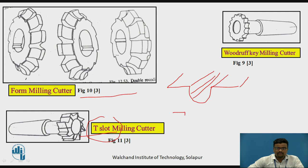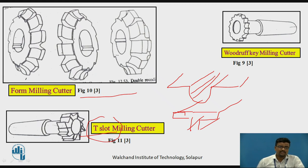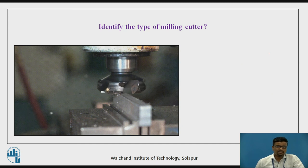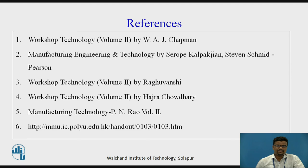With the T-slot milling cutter you can generate T-slots on the workpiece. If you want to provide a keyhole, the Woodruff key milling cutter can be used. These are the different types of milling cutters used for milling operations. In the next session we will correlate the different milling operations with which type of milling cutter to use. There is a simple question — you can watch a short animation or video and identify the type of milling cutter being used.